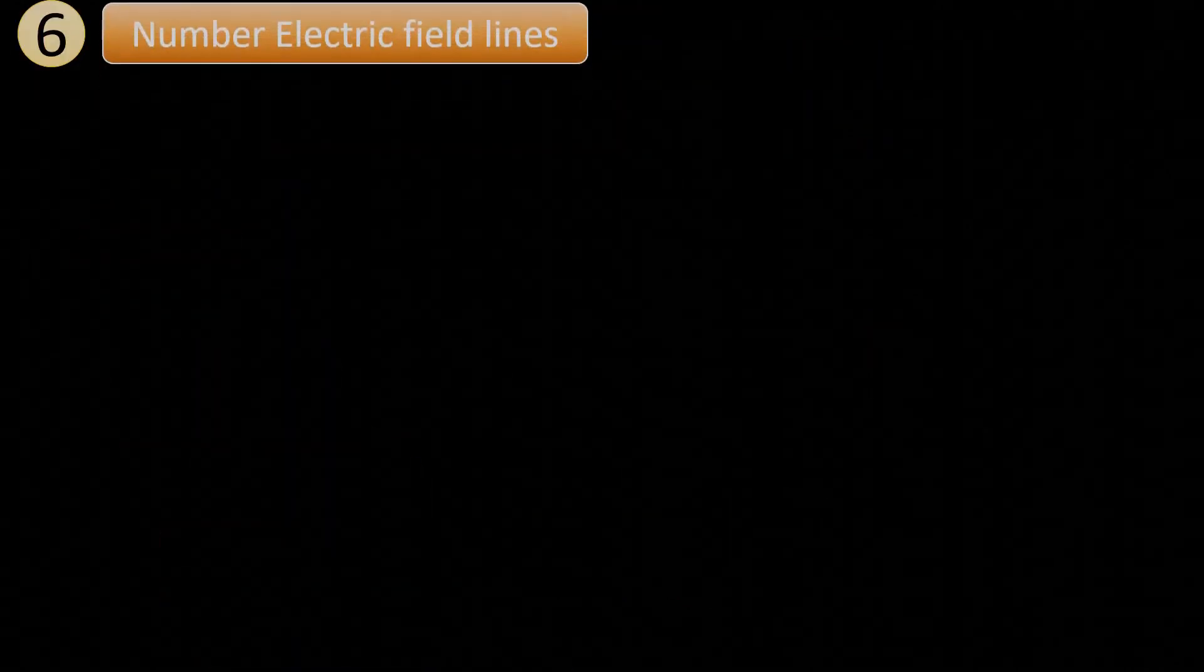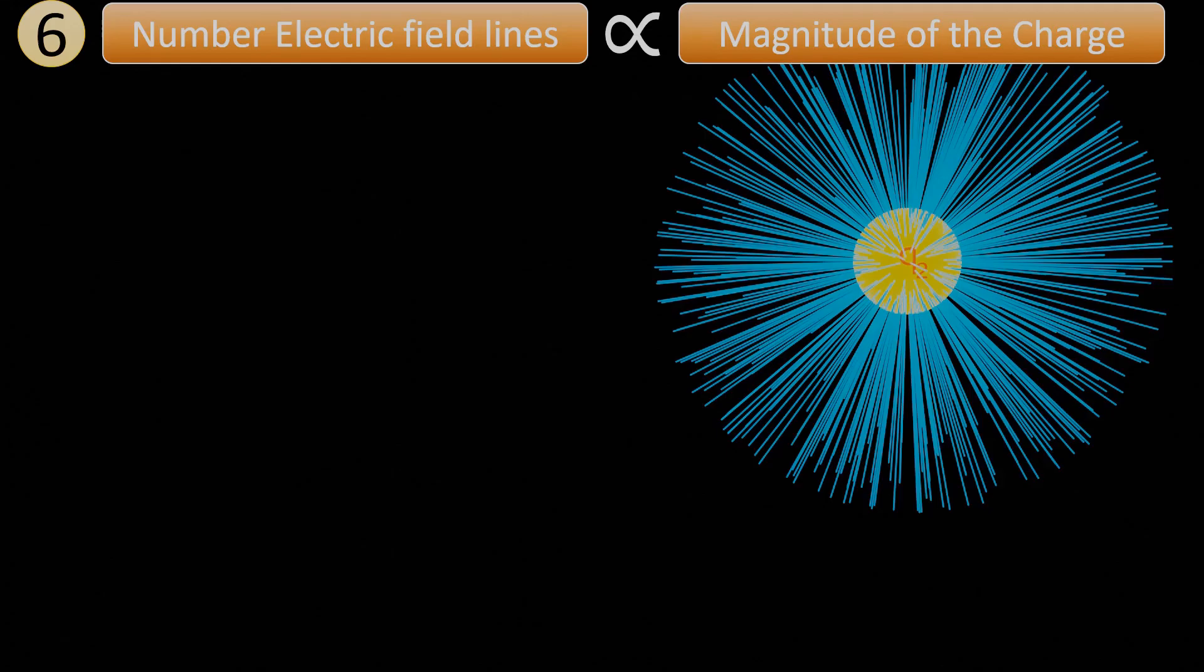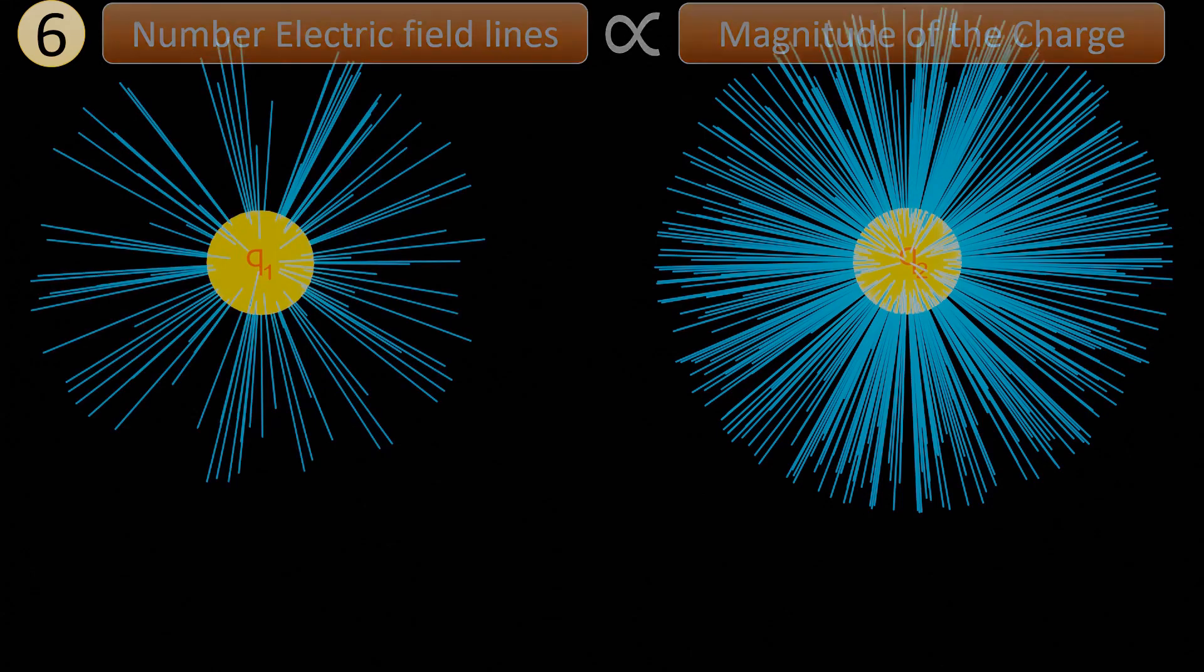The number of electric field lines is directly proportional to the magnitude of the charge. This means that a higher magnitude of charge will result in more electric field lines compared to the lower magnitude of charge.